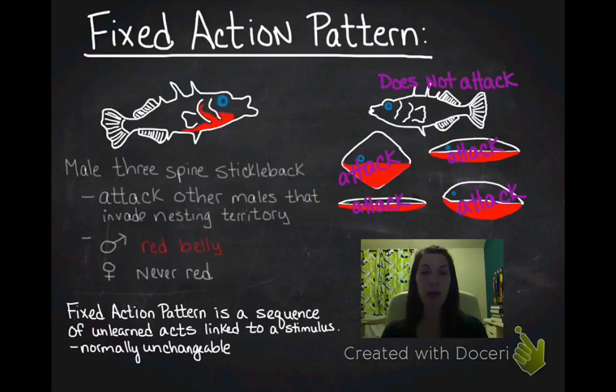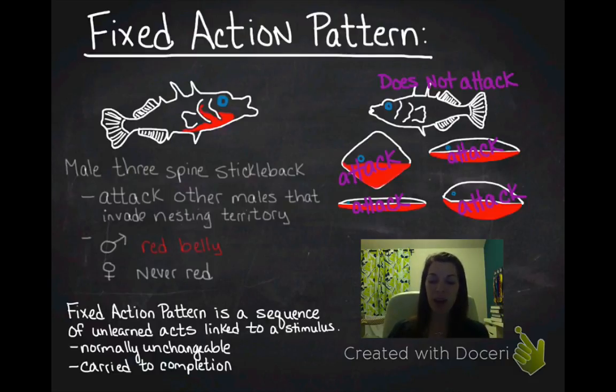And it's normally an unchangeable behavior. So, typically when you have a fixed action pattern, you can't deviate from that fixed action pattern. And it's carried to completion. So, if you remove the fish decoy in the middle of the male's attack, it will continue the attack motion. Because it's not a learned attack behavior. It's a hardwired in behavior. So, that's a fixed action pattern.